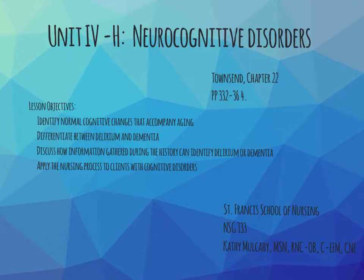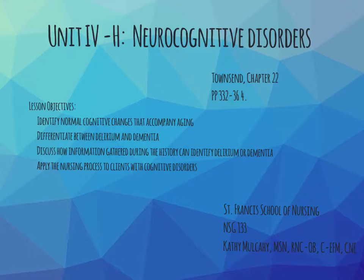We're starting Unit 4-H, the neurocognitive disorders. We're in Townsend this time, Chapter 22, pages 332 to 364. On lesson objectives, we're going to identify the normal cognitive changes that accompany aging. It's important to note that dementia or neurocognitive disease is not an inevitable part of aging, although some cognitive changes, including reaction time, recall time, short-term memory, and some differences in the ability to process new information, are part of that normal aging process.